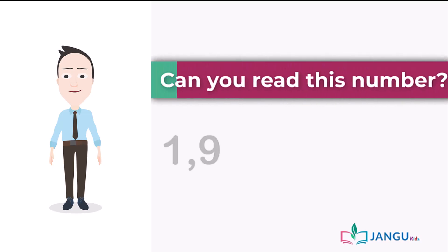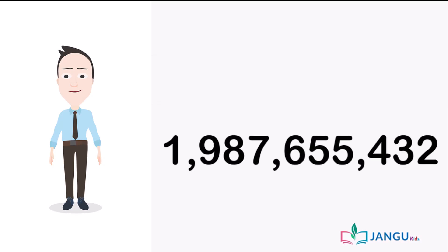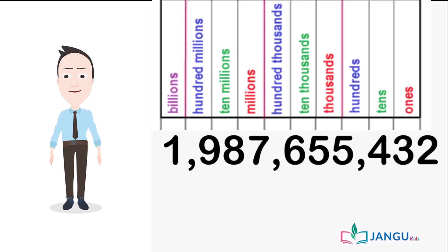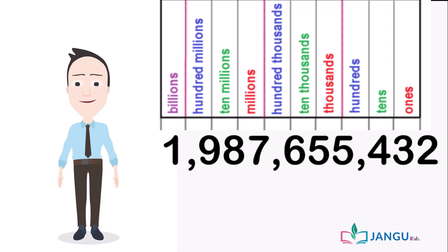Let's go a bit higher to billions. Can you read this number? As usual, we need to draw a place value chart and place each digit in the chart from left to right. So we have one billion, nine hundred million, eighty million, seven million, six hundred fifty thousand, five thousand, four hundred, thirty tens, and nine units. Putting it all together, we have one billion, nine hundred and eighty-seven million, six hundred and fifty-five thousand, four hundred and thirty-two.